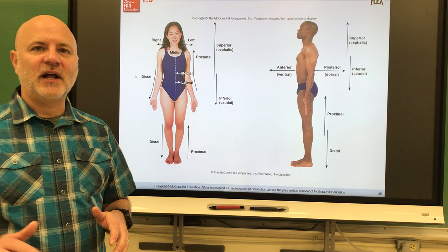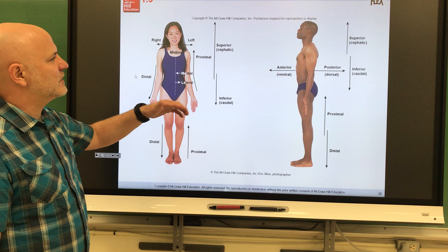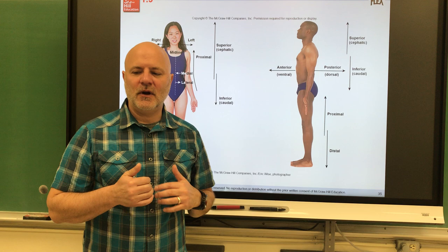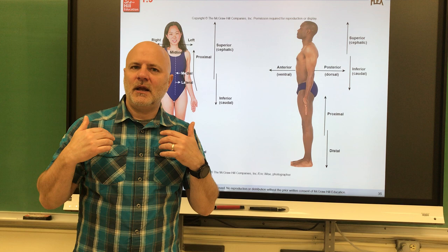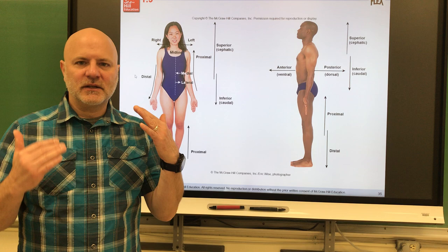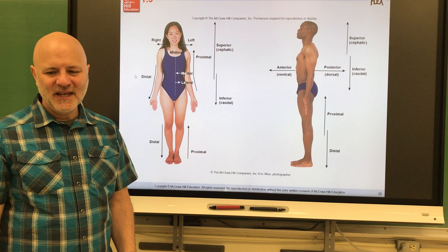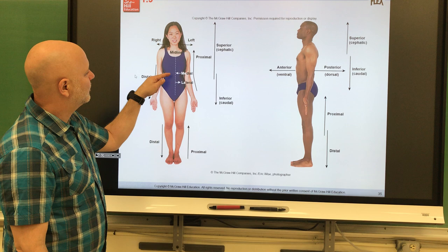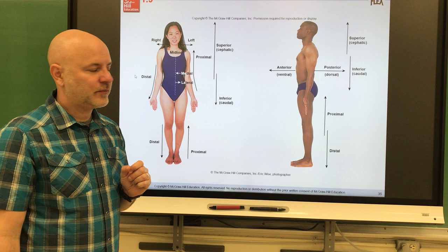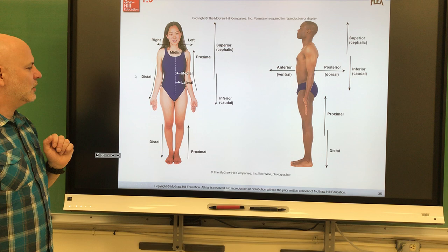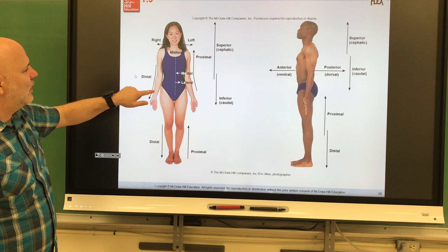Now let's look at anatomical terminology for relative positions — describing one body part in relation to another. Superior means a body part is above another (e.g., the head is superior to the chest). Inferior means below (the chest is inferior to the head). Anterior or ventral means toward the front; posterior or dorsal means toward the back. Medial means closer to the midline of the body; lateral means away from the midline. Proximal means closer to the point of attachment (toward the shoulder), and distal means farther from the point of attachment (toward the wrist).